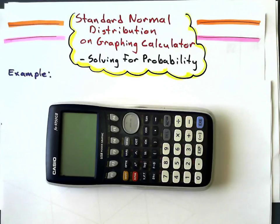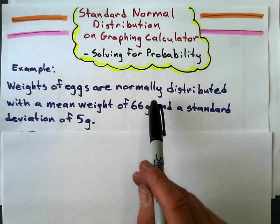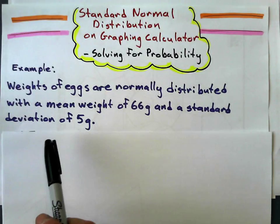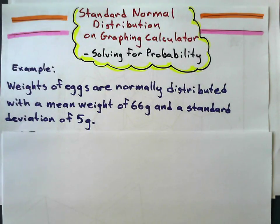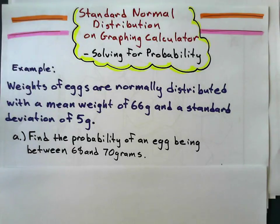Let's take a look. Suppose I say weights of some eggs are normally distributed with a mean weight of 66 grams and a standard deviation of 5 grams. So what I need to know is I've got the mean, standard deviation, and my question is: